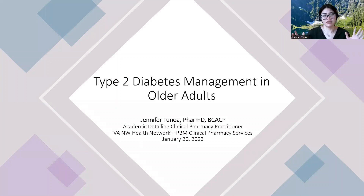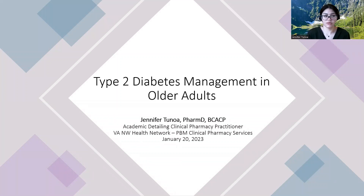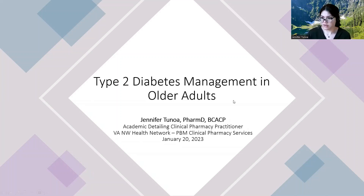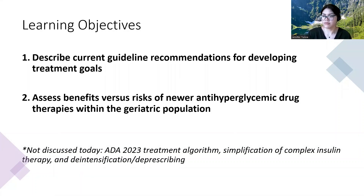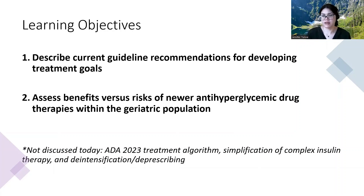We're going to focus today more on the relatively newer agents because we're using them a lot more often, and they have a lot of great benefits, but the risks associated with them — we need to focus on them more for our geriatric population because they can lead to more harmful consequences. We'll also chat about developing a treatment goal based on current guideline recommendations, but mostly we're going to be looking with a geriatric lens at the benefits and risks of the newer anti-hyperglycemic drug classes.